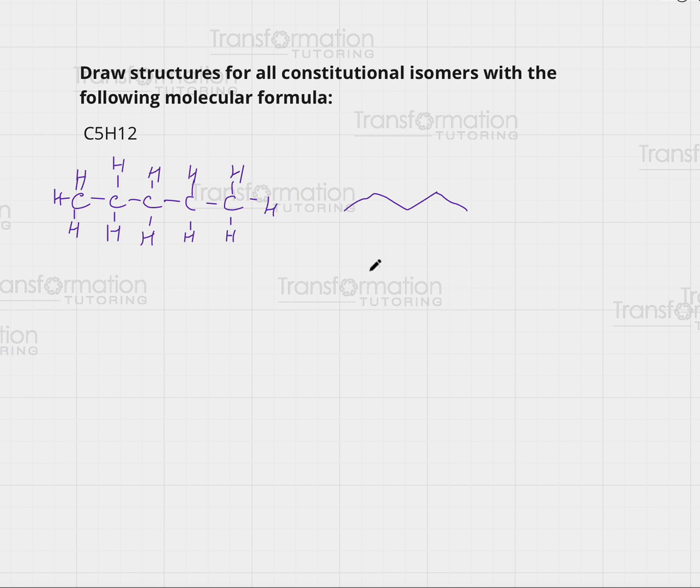For example, instead of a 5 carbon chain I could have a 4 carbon chain: 1, 2, 3, 4. Where could I add my 5th carbon? It could go either on this carbon or on this carbon. Notice you could not add it to the end. Do not add it to the end because if we do, we will have the same molecule that we have drawn before. We can add it here.